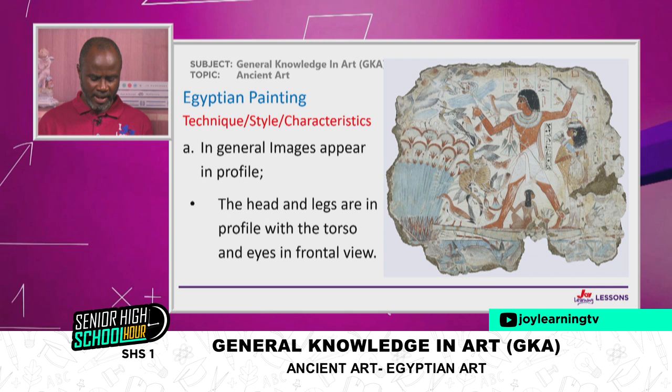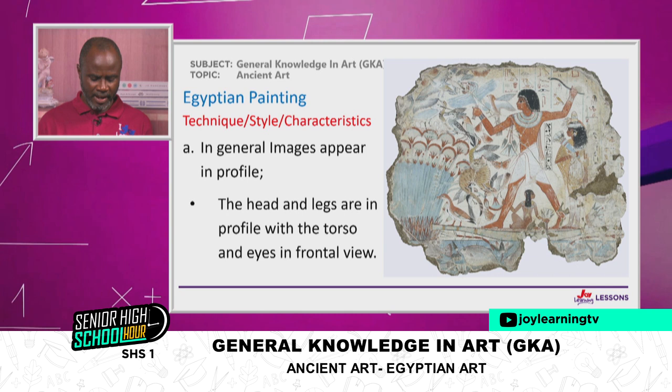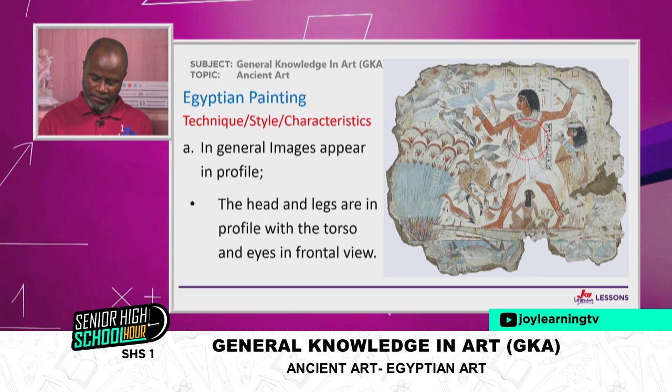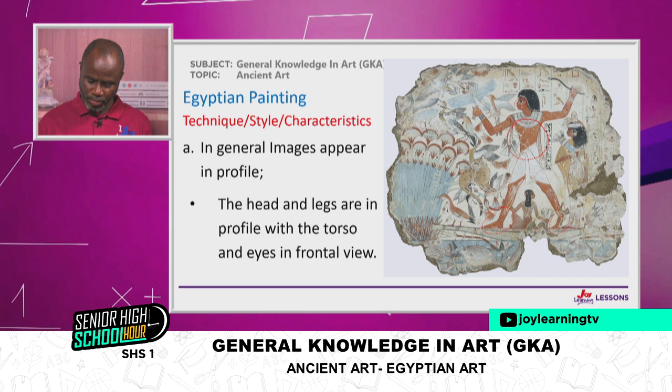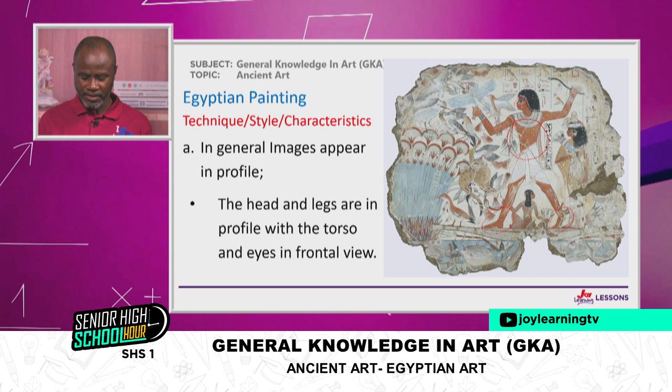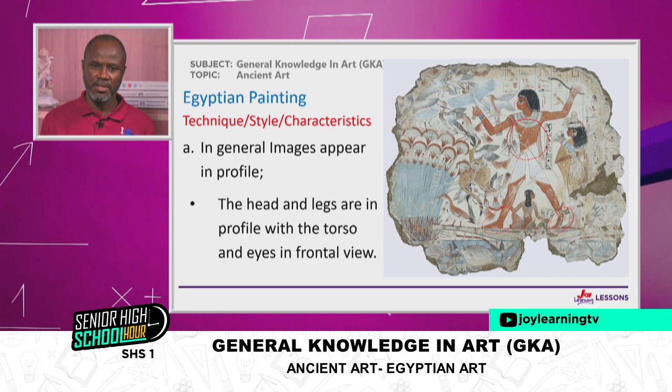The head and legs are in profile, with the torso and eyes facing front. So you can see the full belly but you cannot see the full side of the eye. The legs are also in profile, but it looks very unusual — how could you see someone's full belly but not the other sides fully? That's just the nature of Egyptian art. These are some of the characteristics.